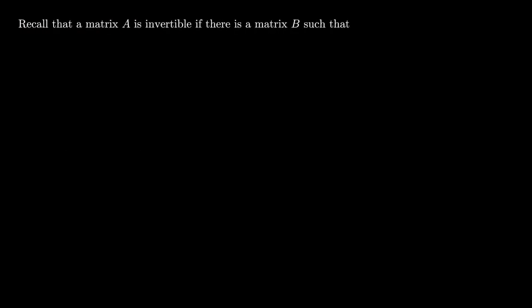Recall that a matrix A is invertible if there's a matrix B such that AB equals BA equals the identity. In other words, we can undo the operation of matrix multiplication via another matrix. An equivalent way of defining this is by saying that a matrix is invertible if its determinant is non-zero.